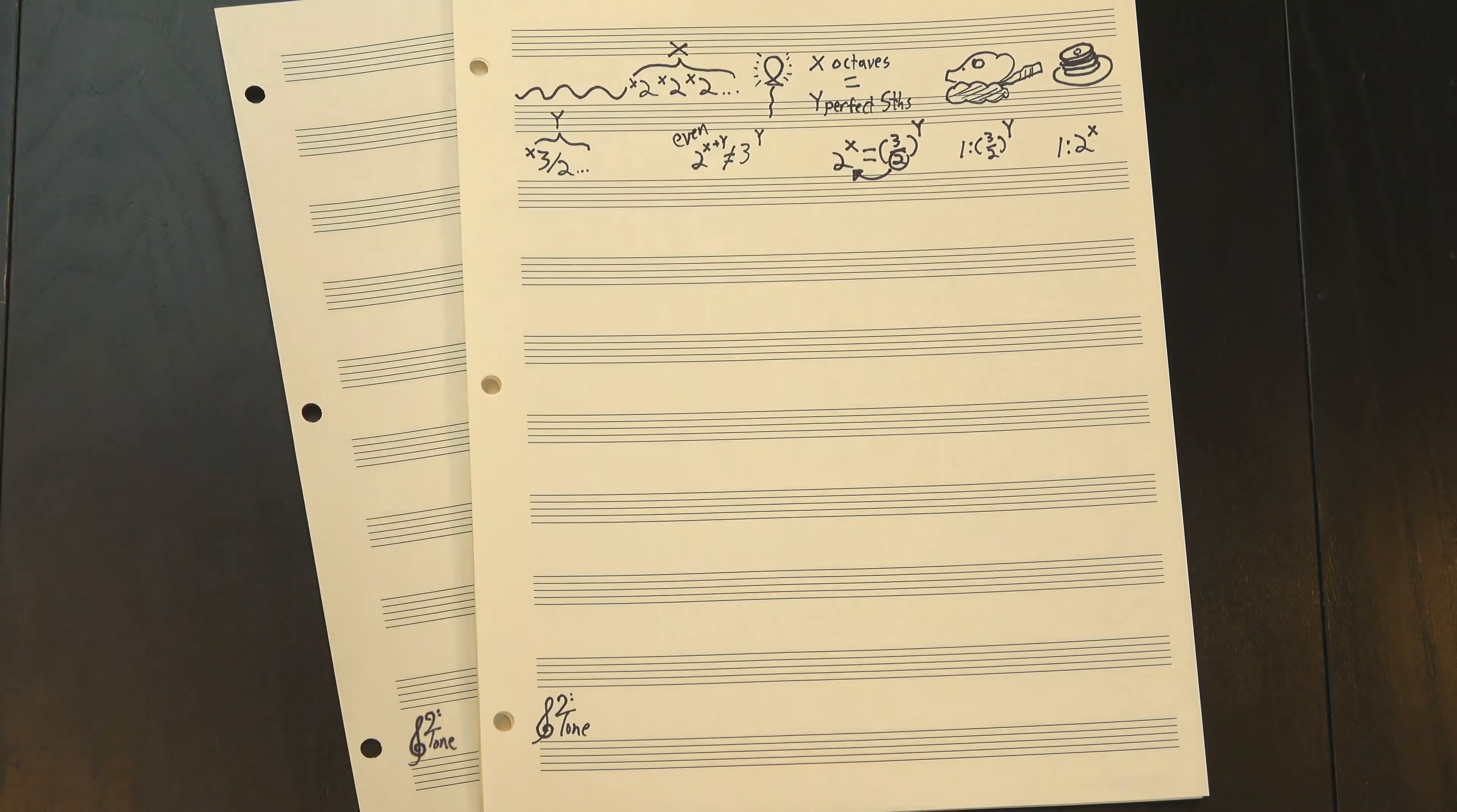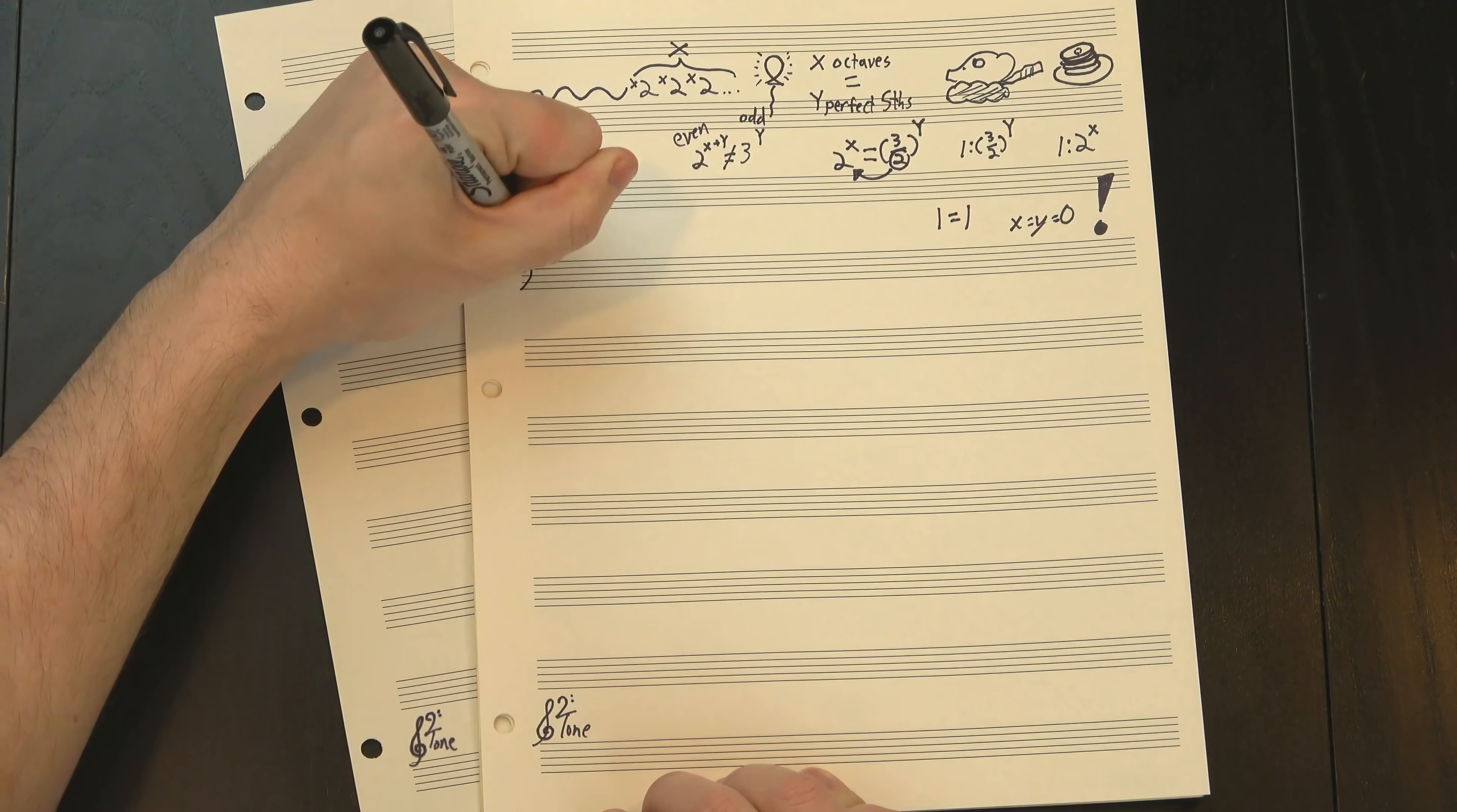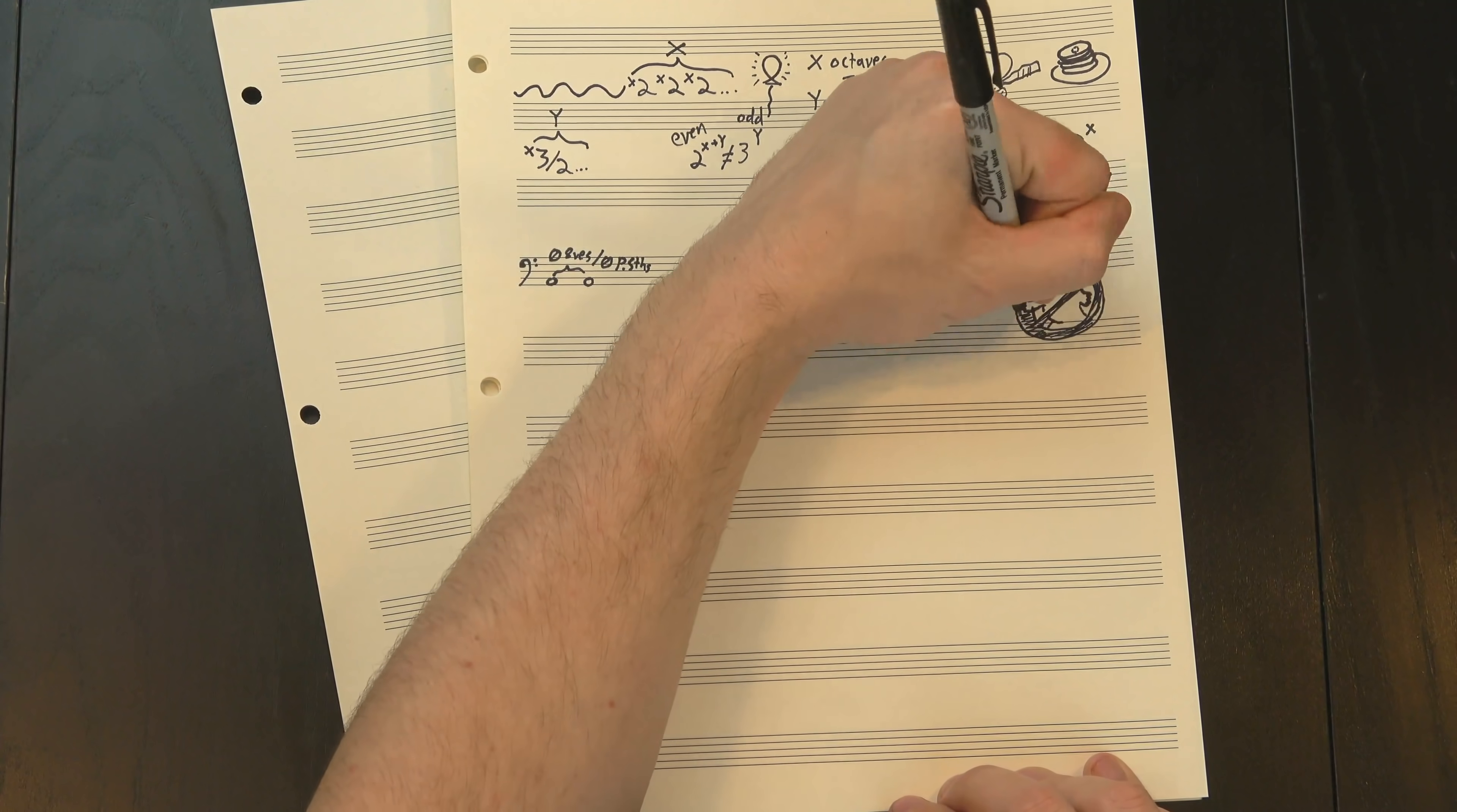But these two numbers can't possibly be equal. I mean, first of all, this one's always even, and this one's always odd. Actually, there is one solution. If x and y are both 0, then this is 1 equals 1, which means that going up 0 octaves is, unsurprisingly, the same as going up 0 perfect fifths. But, and this is the important part, so if you tuned out now's the time to tune back in, once you start moving, these streams will never cross again.